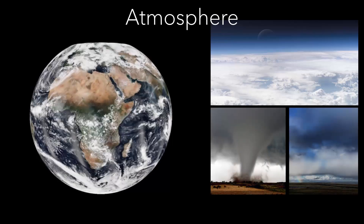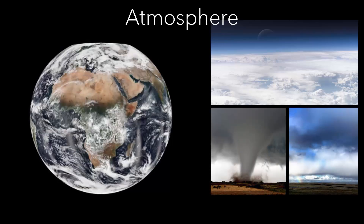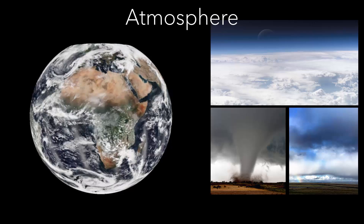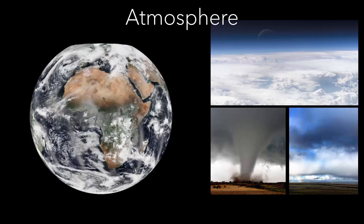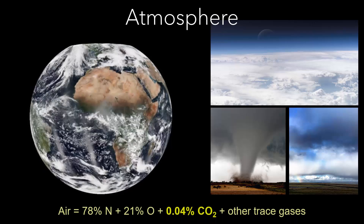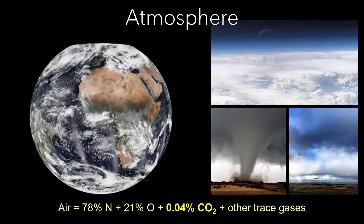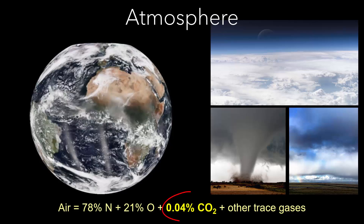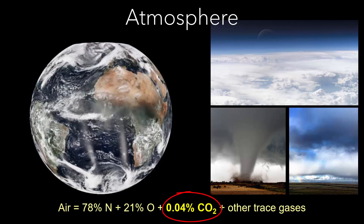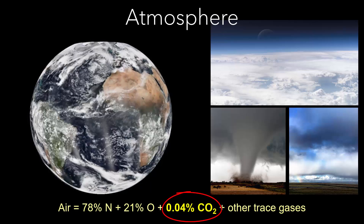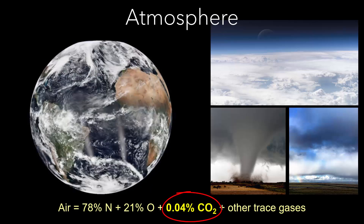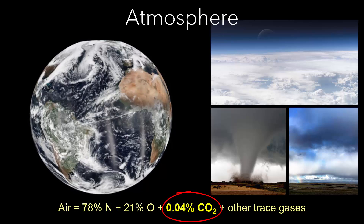We will start with the atmosphere. We live in the lowest layer of the atmosphere, and this layer contains all the weather that we experience, plus all the air we breathe. The air includes a small fraction of carbon dioxide, along with the more abundant nitrogen and oxygen gases. This tiny amount of carbon dioxide makes an outsized contribution to Earth's climate.